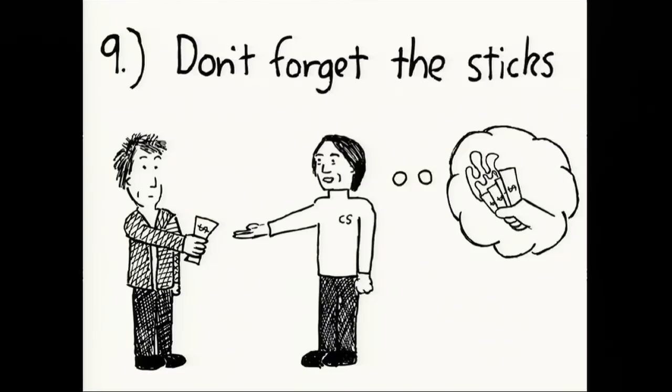The ninth point is to tap into a fundamental human driver, which is that we hate losing things. We hate losing things a lot more than we love winning them. So build some negative incentive into whatever it is that you want to change.